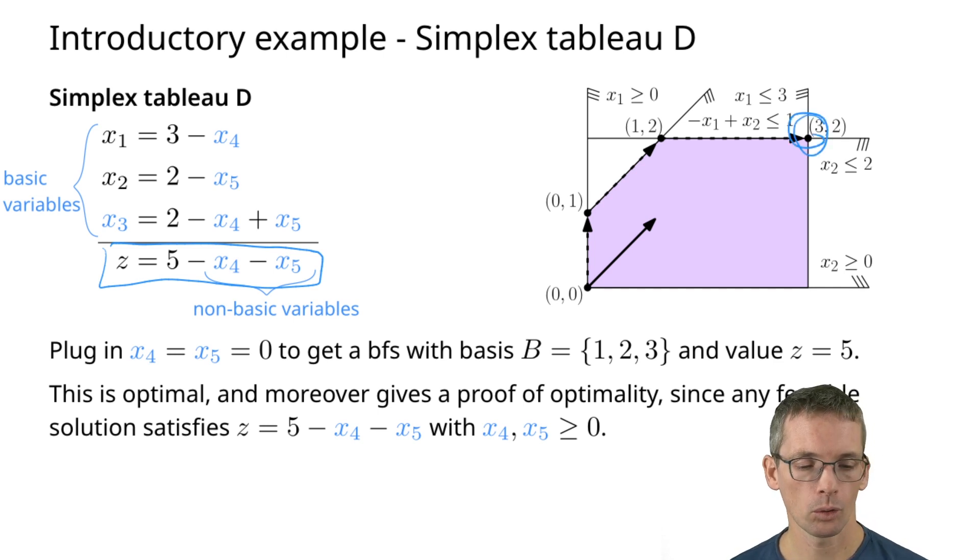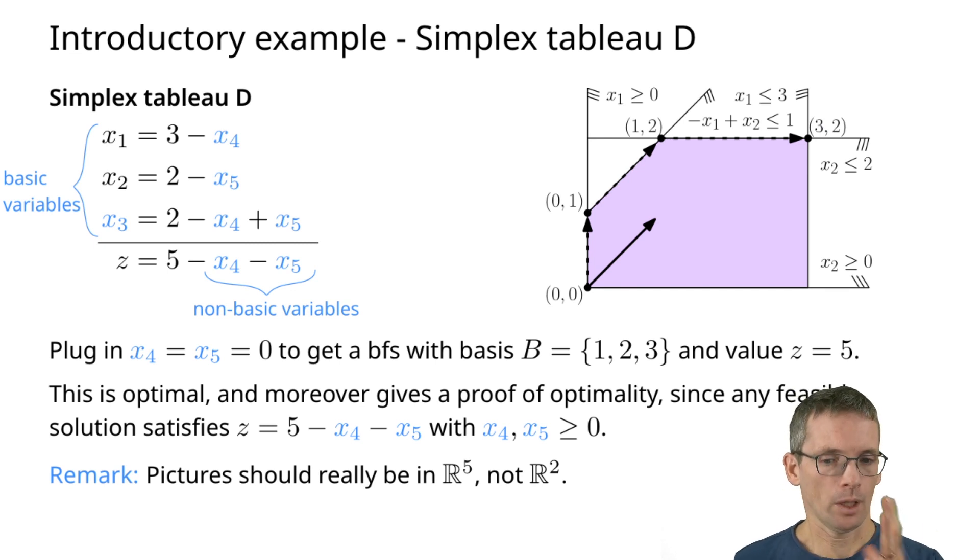And it is the solution up here. You see 3, 2. Of course, in principle we are in five dimensions because we have five variables. This I would not be able to draw, but this two-dimensional example I can nicely draw and we can see how our pivot steps bring us to the solution up there.